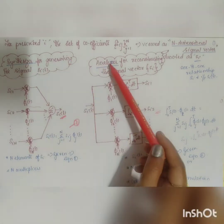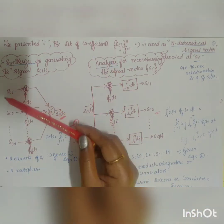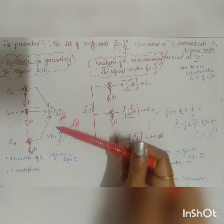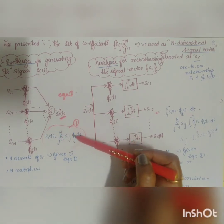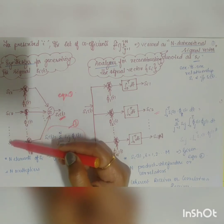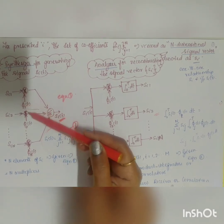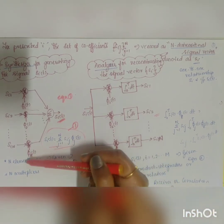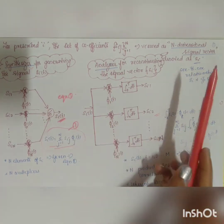This can be represented by two block diagrams. The first is the synthesizer (transmitter side): inputs are coefficients s_i1, s_i2, ..., s_iN. Each coefficient is fed to a multiplier whose other input is the orthonormal basis function phi_1(t), phi_2(t), ..., phi_N(t). The multiplier outputs are summed to produce the signal s_i(t), implementing equation 1. There are N elements and N multipliers.